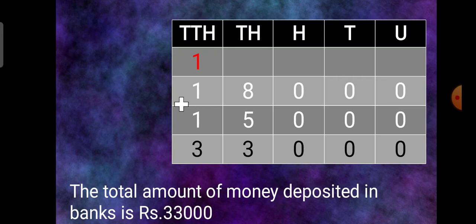TTH, we are going to make one more extra column that is ten thousands. Now write 18,000 plus 15,000. The answer will be 33,000. We will write the statement: total amount of money deposited in the bank is Rs 33,000.